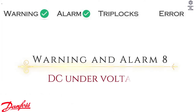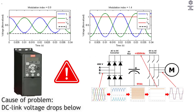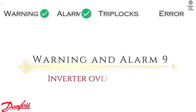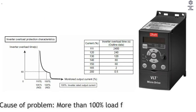Warning and Alarm 8: DC Undervoltage. Cause of Problem — DC link voltage drops below the voltage warning limit. Warning and Alarm 9: Inverter Overloaded. Cause of Problem — more than 100% load for too long.